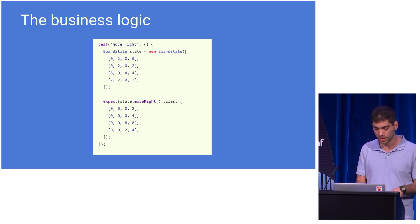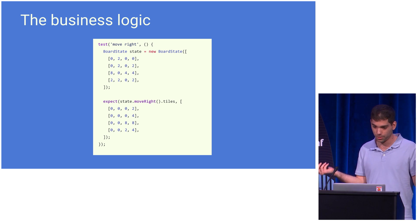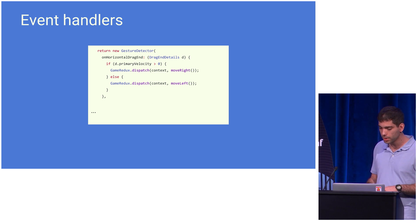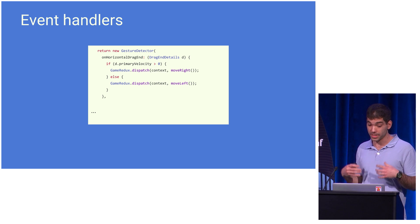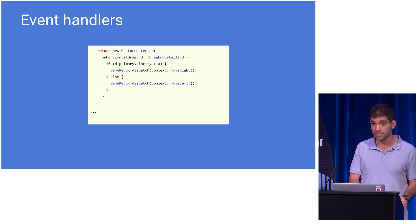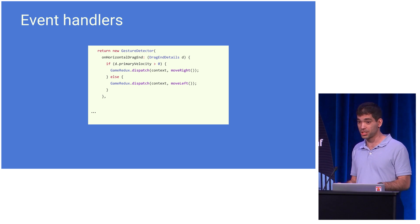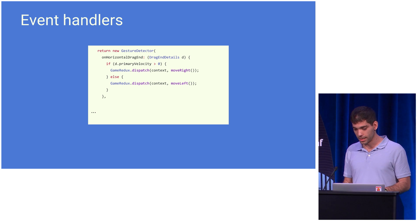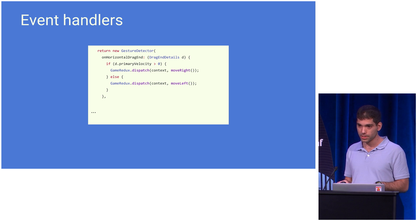Here we see a unit test for the move right operation, which is basically what you would expect. This is how we set the gesture detector for our game board. We basically say, when we detect a horizontal drag, we just need to figure out what was the direction — left or right — and dispatch a move left or move right action to the store. And this is the only thing that the UI is doing directly in response to user events: dispatching actions through the store.